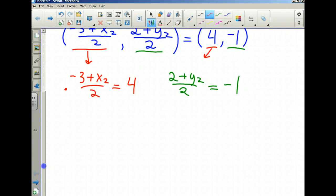To solve this, we're going to multiply 2 on both sides of the equation. The 2's cancel out on the left, and I have -3 + x₂ = 8. Continuing to solve, we get that x₂ equals 11.